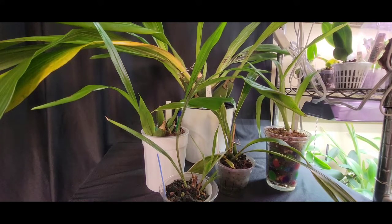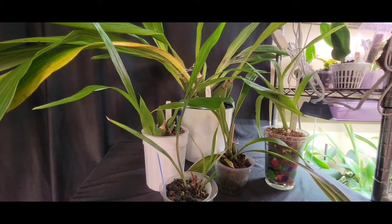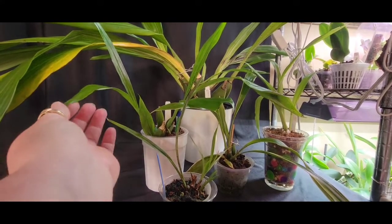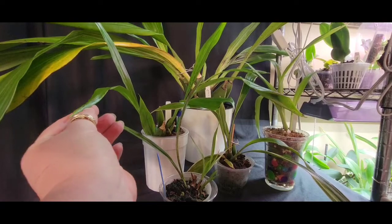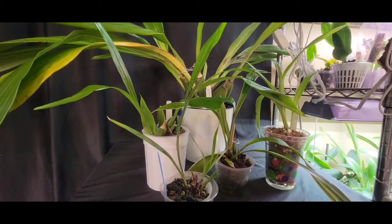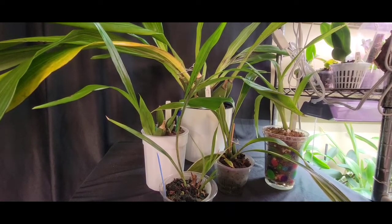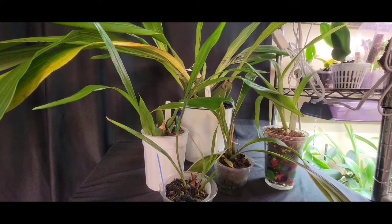Almost every zygo I've ever seen has had some kind of blemishes. The new growths come out looking really nice and then all of a sudden, bam. And I really don't know why my oncidiums do the same thing. So I don't know if that's something I'm doing wrong or, you know, I think I asked Michael about it one time.